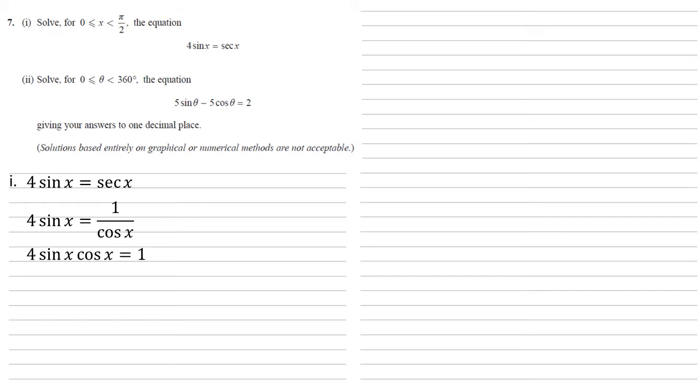Now if we use the double angle formula, we can change the left side into 2 sin 2x. Dividing both sides by 2 gives us sin 2x equals 1 half.